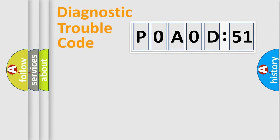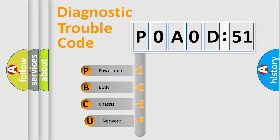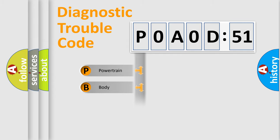Let's do this. First, let's look at the history of diagnostic fault code composition according to the OBD2 protocol, which is unified for all automakers since 2000. We divide the electric system of the automobile into four basic units: Powertrain, Body, Chassis, and Network.